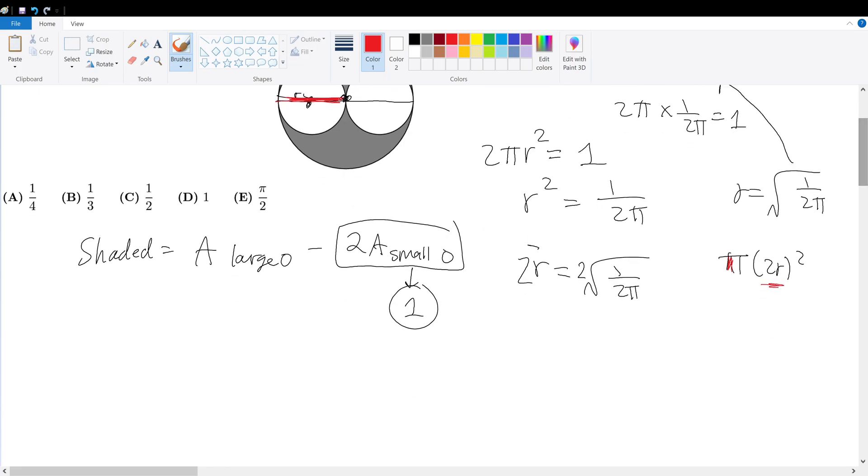So then let's solve for that. Well, we know that 2r is equal to two times that. So what is π times this quantity squared?